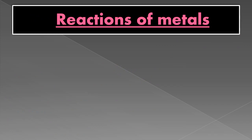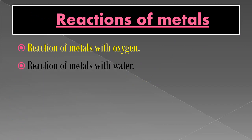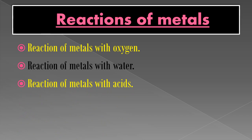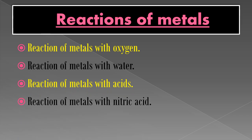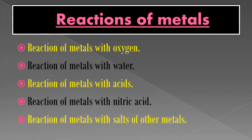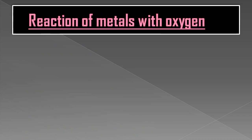Here are the different reactions of metals we have to study: first, reaction of metals with oxygen; second, with water; third, reaction of metals with acid — both dilute and concentrated; fourth, reaction of metals with nitric acid (HNO3); and fifth, reaction of metals with salts of other metals. Let's study them one by one, starting with the reaction of metals with oxygen (O2).